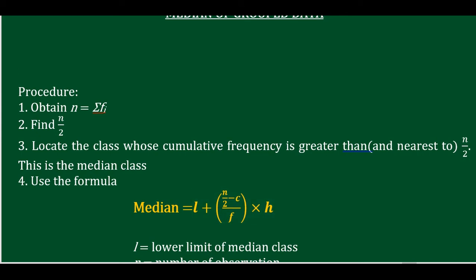The median formula is: Median = L + (N/2 − C)/F × H, where L is the lower limit of the median class. Class intervals: 5 to 10, 10 to 15, 20 to 25. The median class L is 23.